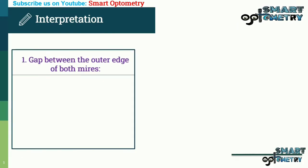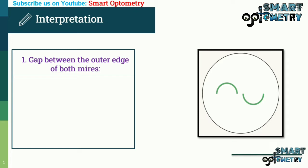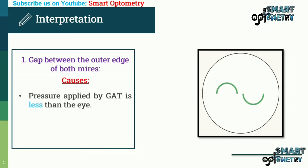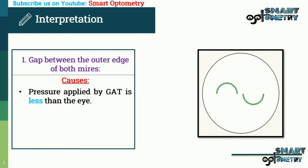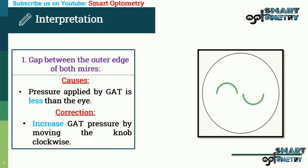Interpretation: Gap between the outer edge of both mires. This occurs because the pressure applied by GAT is less than the eye. Correction is to increase GAT pressure by moving the knob clockwise.